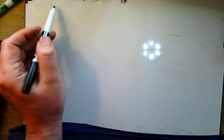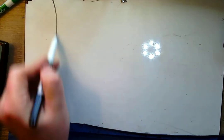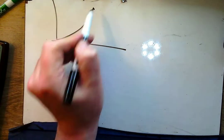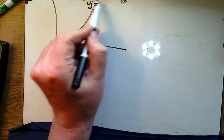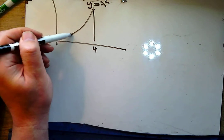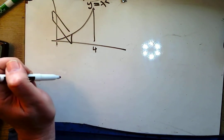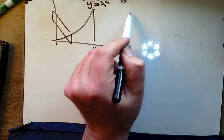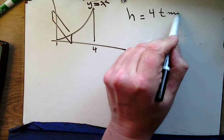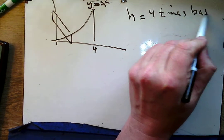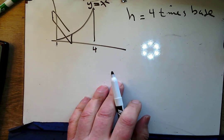We've done rectangles. Maybe you should do a rectangle. Here's your region — y equals x squared out to 4. Find the volume of the rectangle where the height is 4 times the base. Give it a try and come back when you're done.